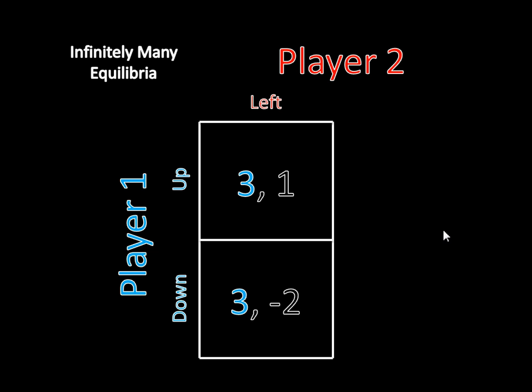He can't profitably change his strategy. So that means there are two pure strategy Nash equilibria here. Up, Left is a pure strategy Nash equilibrium. Player 2 doesn't want to deviate to Right because that was a strictly dominated strategy, and Player 1 can't profitably deviate to Down because 3 is still 3.